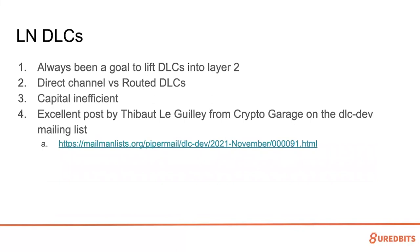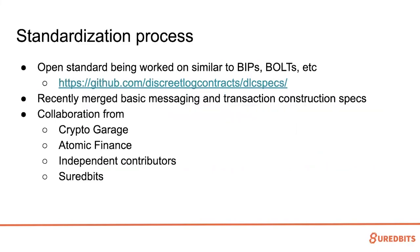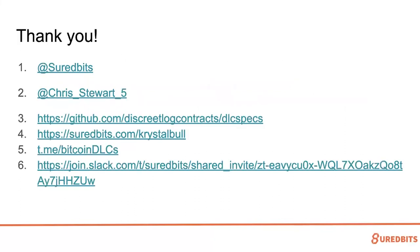If you want to read about Lightning DLCs, go check out that mailing list post from Tibo — an awesome open source DLC contributor from Japan. If any of this interests you, we have examples on our Bitcoin S website: an election example, a sports betting example, and an example of doing financial derivatives with DLCs. The standardization process is open source — we care about building a collaborative community around DLCs. Those are the list of contributors currently working on the DLC spec. This is all my contact information and I'm happy to do DLCs with people here.